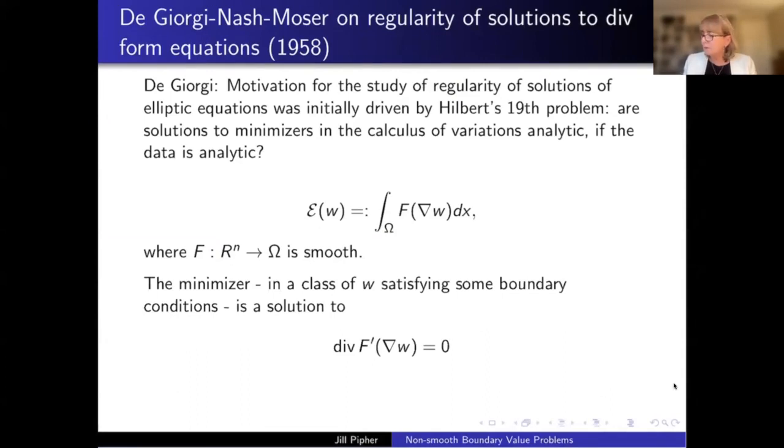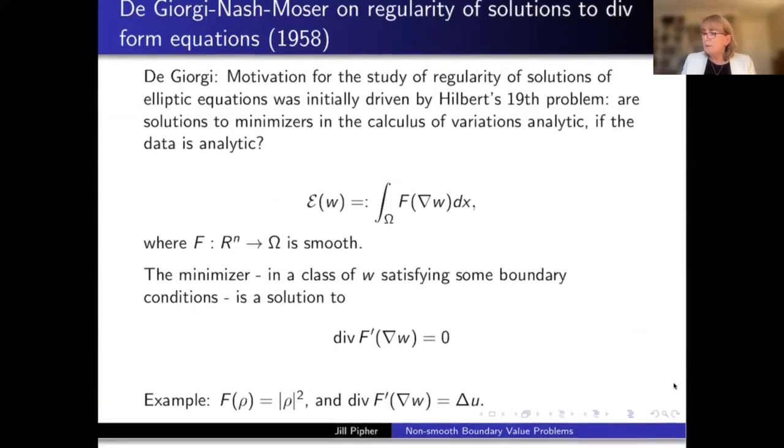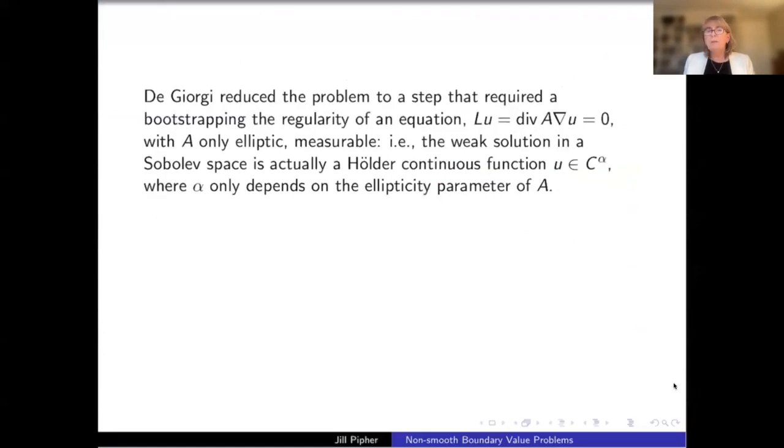Divergence f prime acting on grad w is equal to zero. So here's a concrete example. The concrete example is suppose that your integral is grad w squared. That's what you're trying to minimize, trying to minimize the energy over this domain. And then in that case, your minimizer will satisfy Laplace's equation. So De Giorgi reduced this problem, Hilbert's 19th problem to a step that required bootstrapping the regularity of an equation of this form divergence A acting on gradient of u equals zero, where the matrix A was one of these elliptic, but only bounded measurable coefficients. It was not one of these smooth cases. You can't take the derivative.